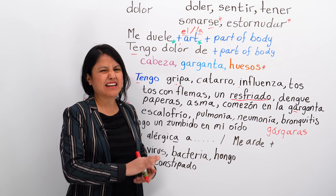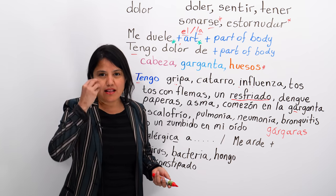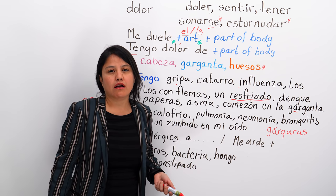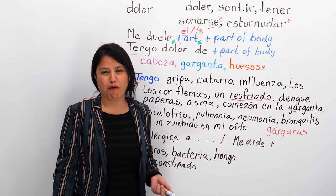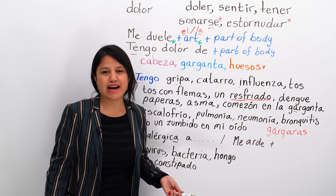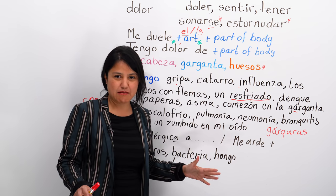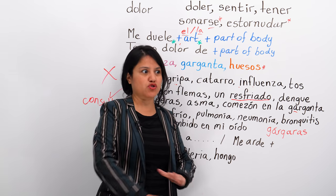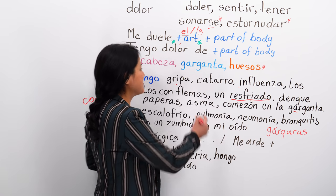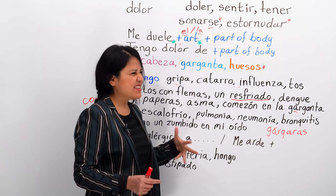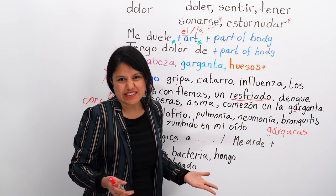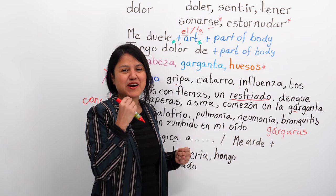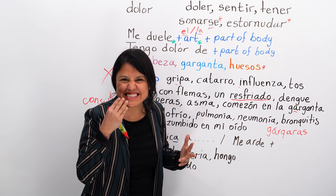Tengo catarro — catarro is like gripa but with a lot more snot and your voice sounds deeper and more congested. Like calamardo from Bob Esponja — calamardo siempre tiene catarro. Catarro is like a nastier, older-sounding cold.